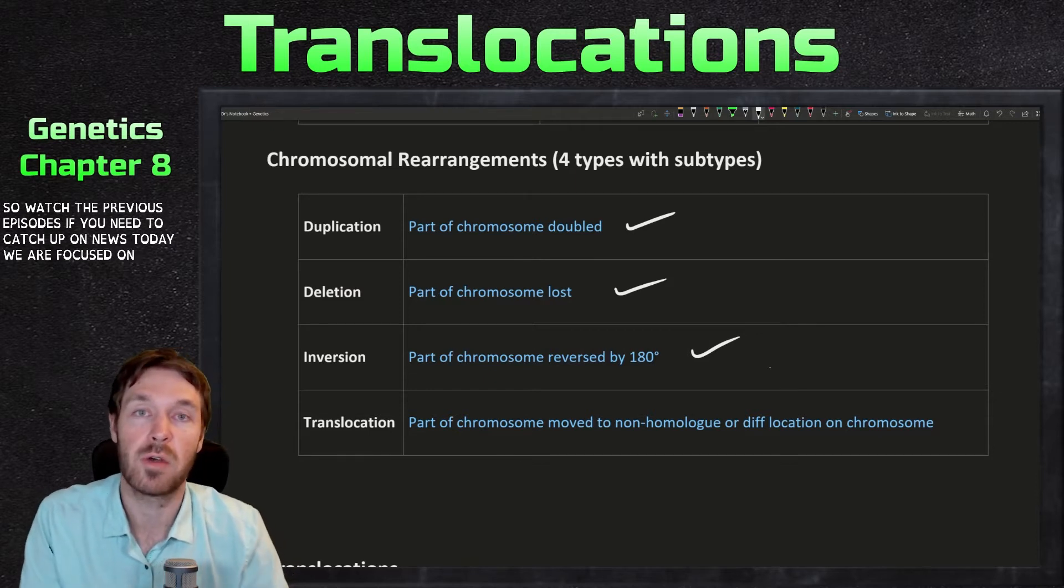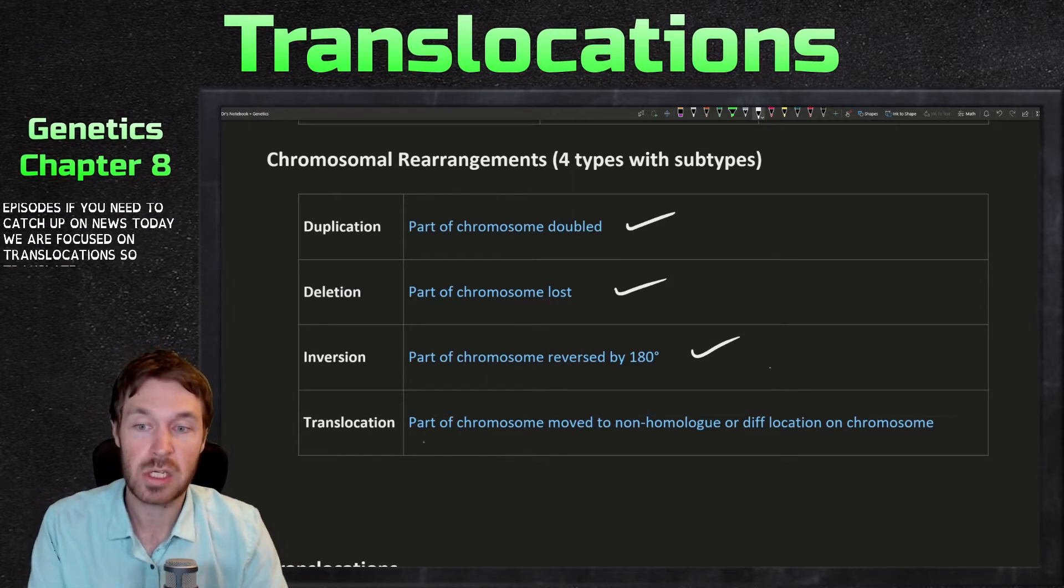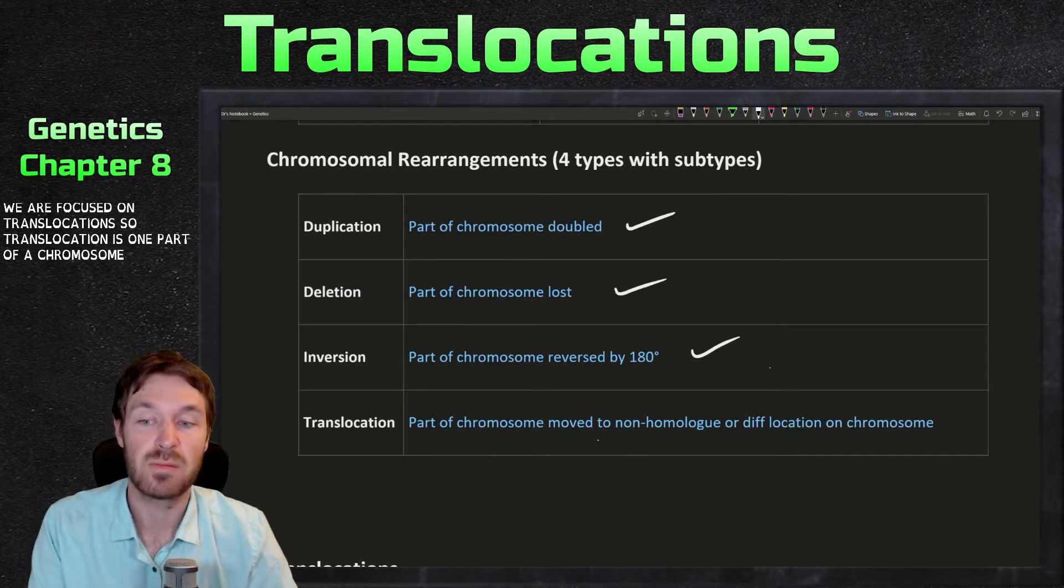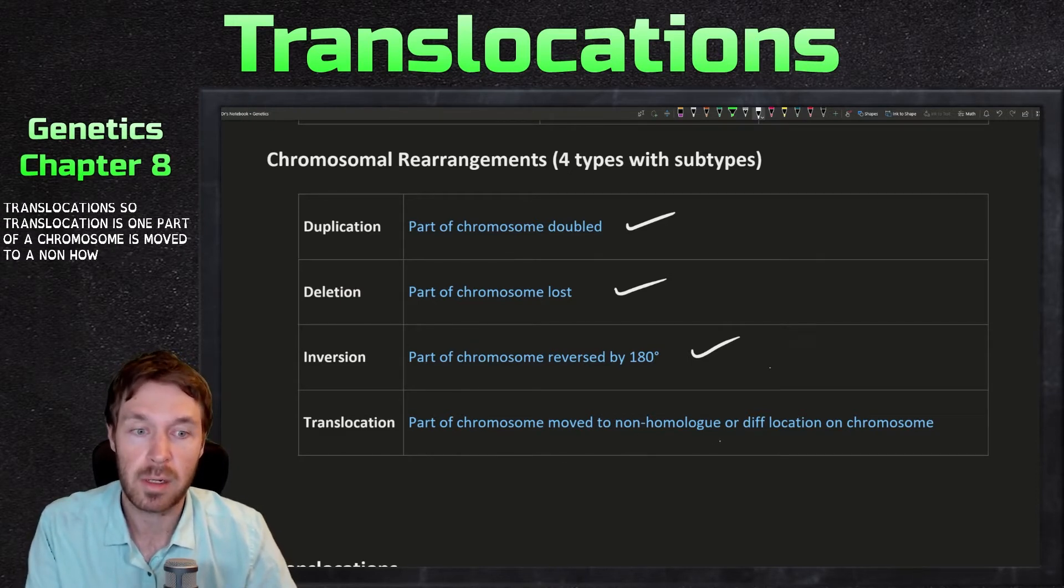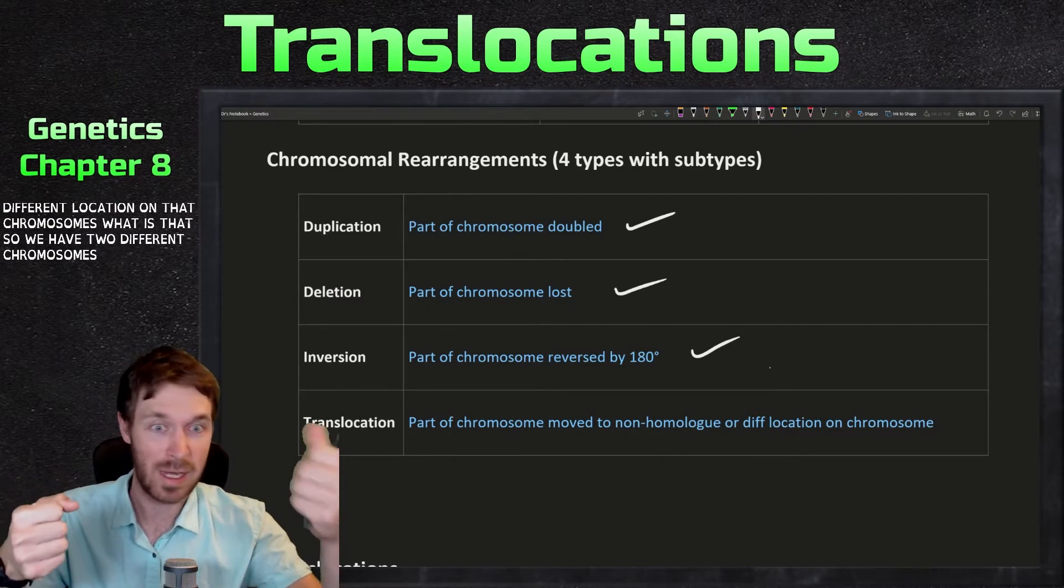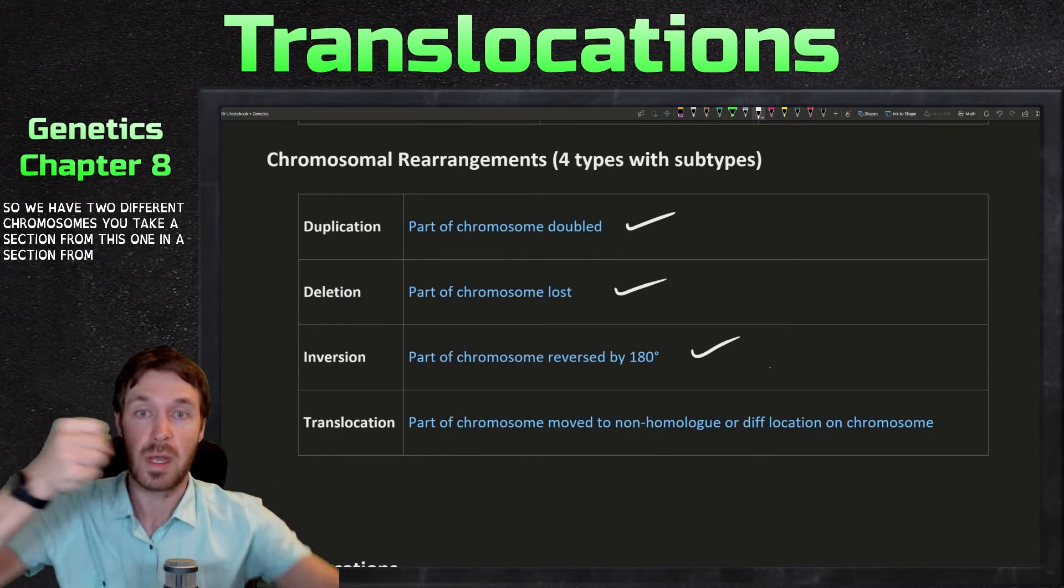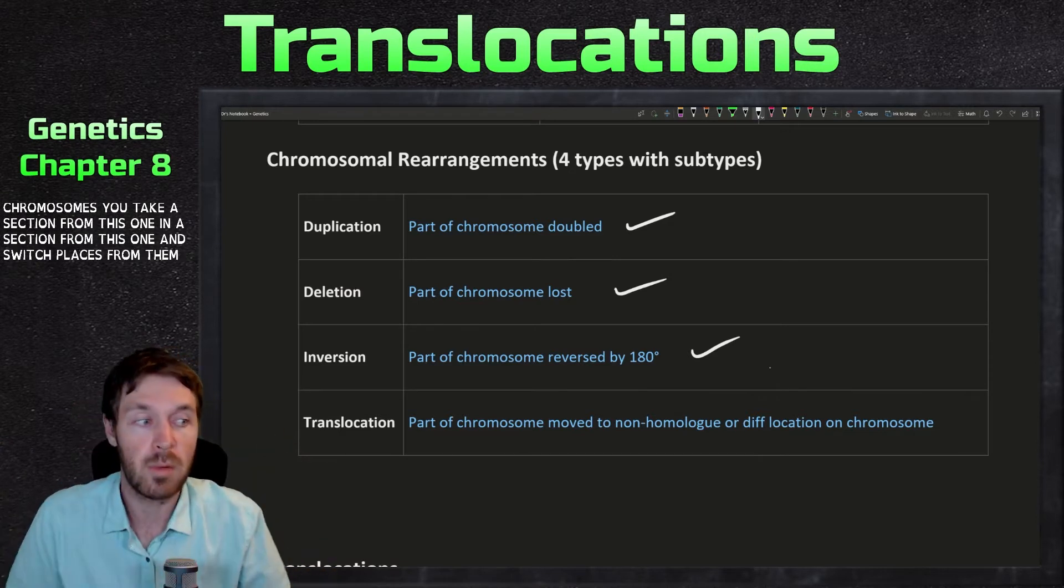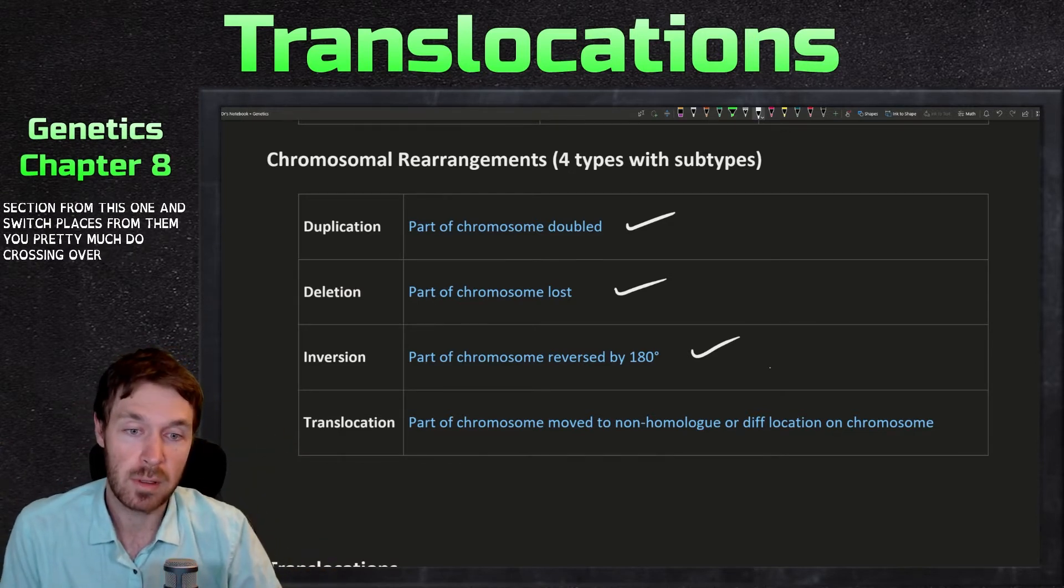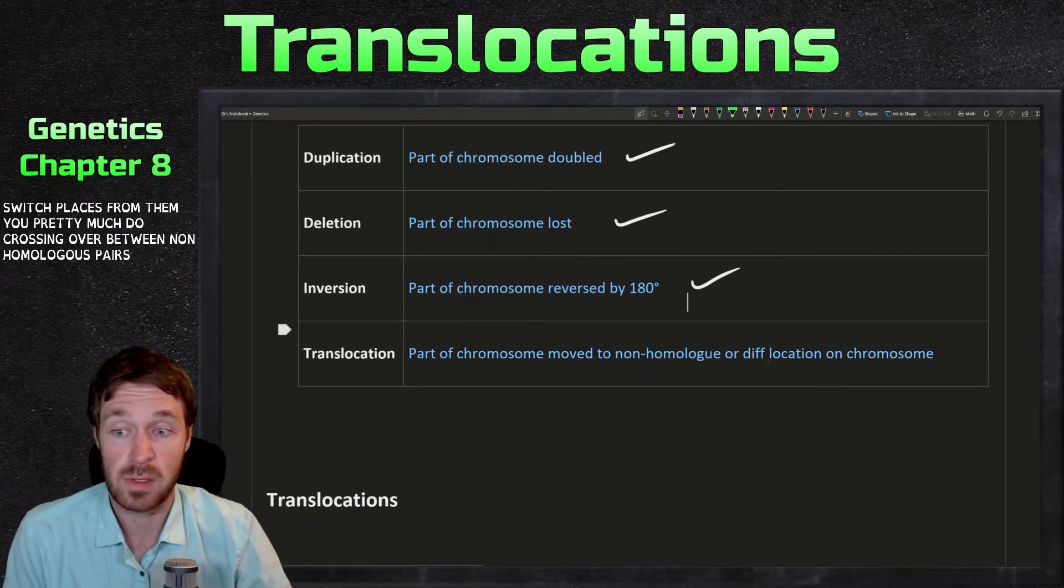Today, we are focused on translocations. So translocation is when part of a chromosome is moved to a non-homolog or a different location on that chromosome. So what does that mean? We have two different chromosomes. You take a section from this one and a section from this one and switch places. You pretty much do crossing over between non-homologous pairs, so different chromosome numbers.